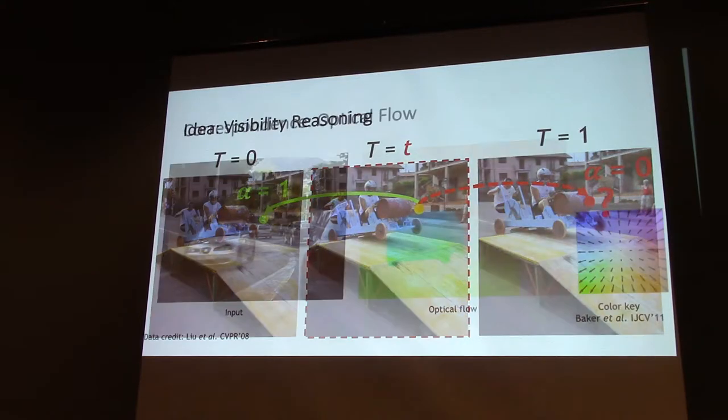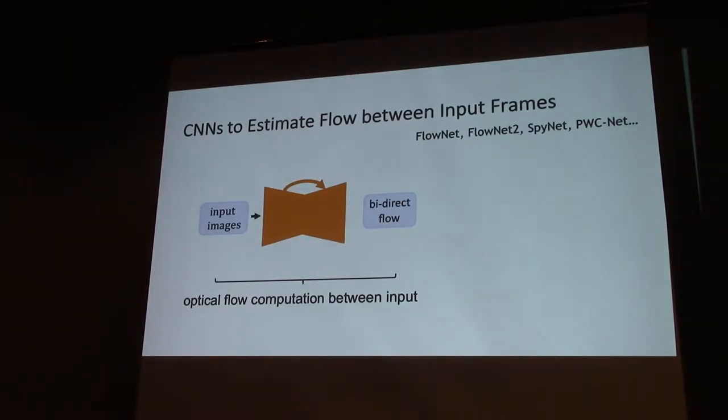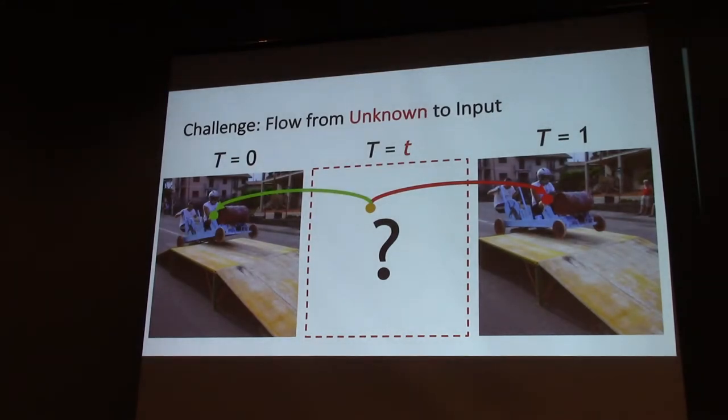It turns out finding correspondence has been well studied in computer vision, known as optical flow estimation. There's a bunch of work using deep convolutional neural networks to estimate optical flow, like FlowNet, FlowNet2, and SpyNet. Here we have a slightly different problem - we need to estimate the optical flow or correspondence from an unknown intermediate frame to input images. So here is a chicken and egg problem. How can we break the chain?